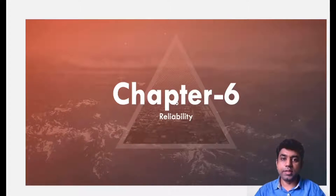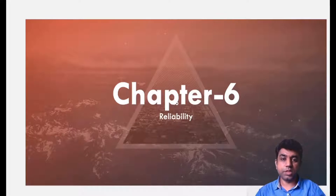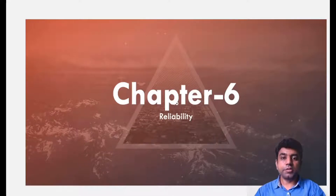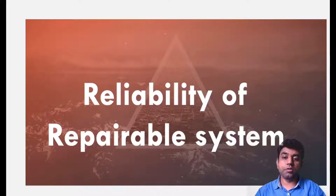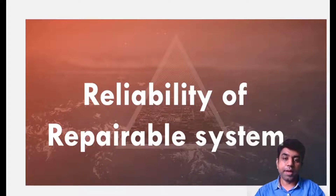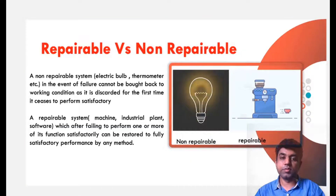We understood a lot about reliability — the concept of reliability with the failure, some basic functions of reliability, and in the last class we understood about the life characteristics. Now in today's class, we are going to discuss the two last topics of reliability. The first one is the reliability of repairable systems. When we talk about repairable system reliability, we first need to understand the difference between repairable and non-repairable products.